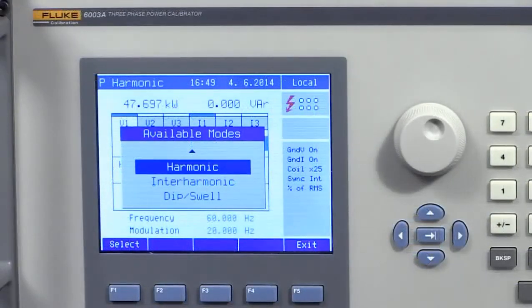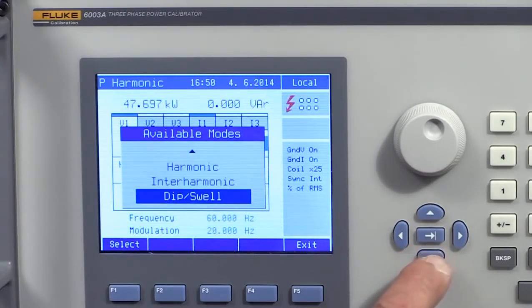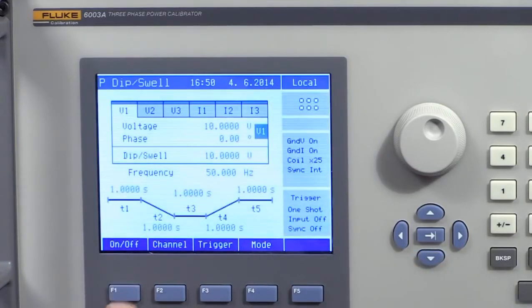The power quality option enables the 6003A to calibrate power quality instruments by generating up to 63 harmonics, an interharmonic, modulation or flicker, and dips and swells on any or all of the three phases of current and voltage.